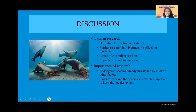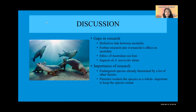This research was comprehensive, but there were many gaps because the Australian sea lion is a widely understudied species. To begin, there is no definite link proven between pup mortality and the parasites. Further research should be done on the effect of ivermectin on mortality in clinical trials to ensure it is safe for a free-ranging species, along with ethical considerations of whether we should be treating a free-ranging species at all. Also, A. microchir is severely understudied in the Australian sea lion.